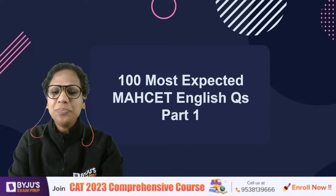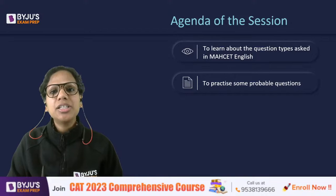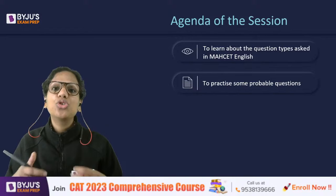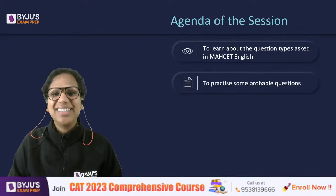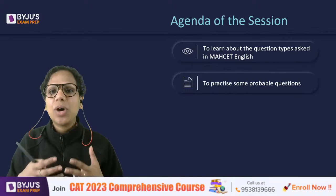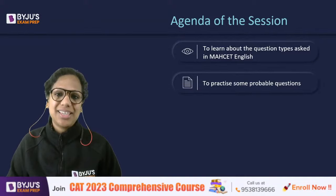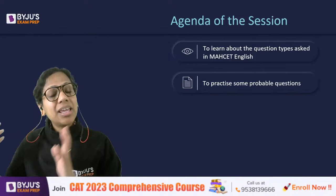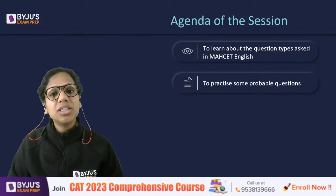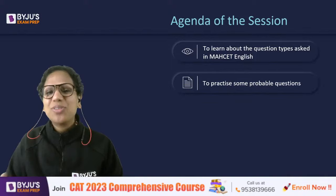March 17-18 are the tentative exam dates. You should not think that you have ample time and can take English lightly. English is one section that requires consistency — especially in terms of vocabulary and grammar. Start preparing right now, attend sessions, and also learn vocabulary and grammar concepts outside of sessions. You will find yourself better prepared when the exam happens.